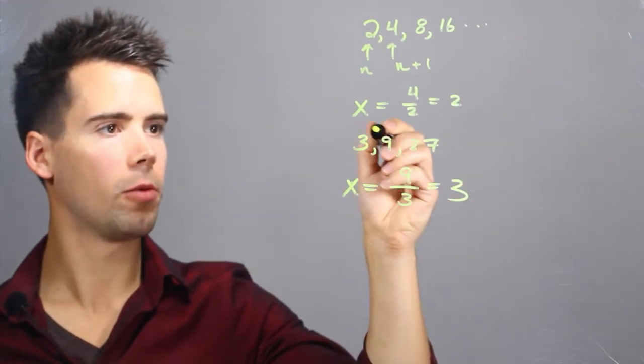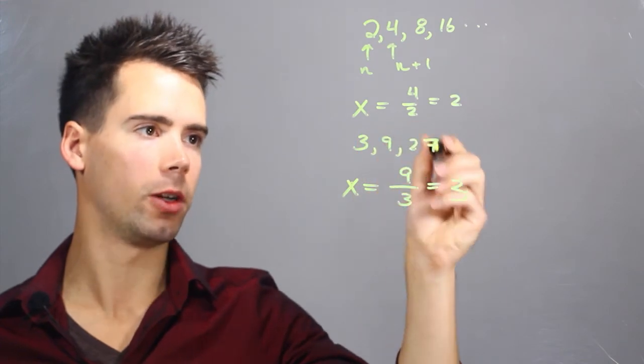And likewise we can get from one term to the next by multiplying by 3. 3 times 3 is 9, 9 times 3 is 27.